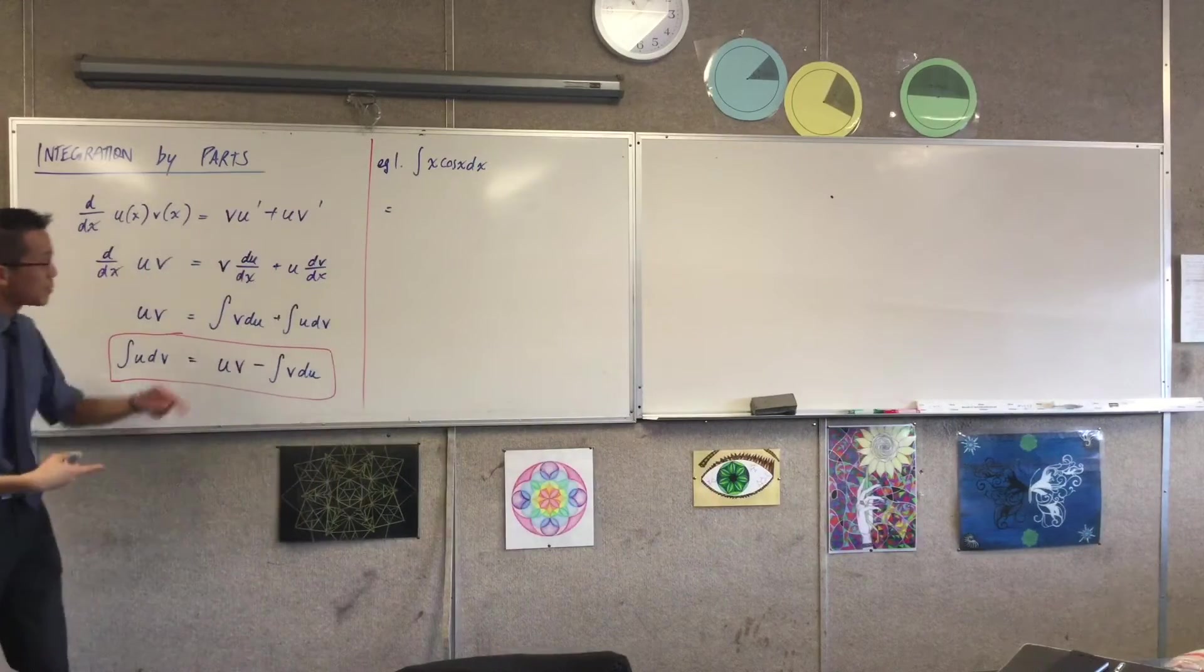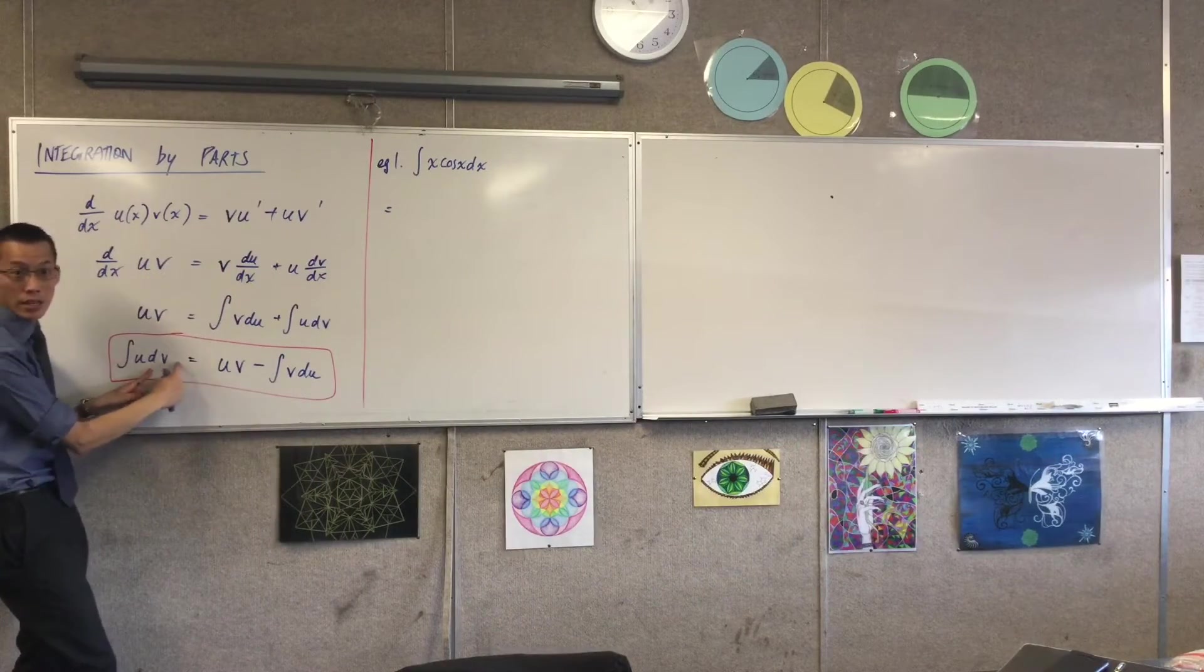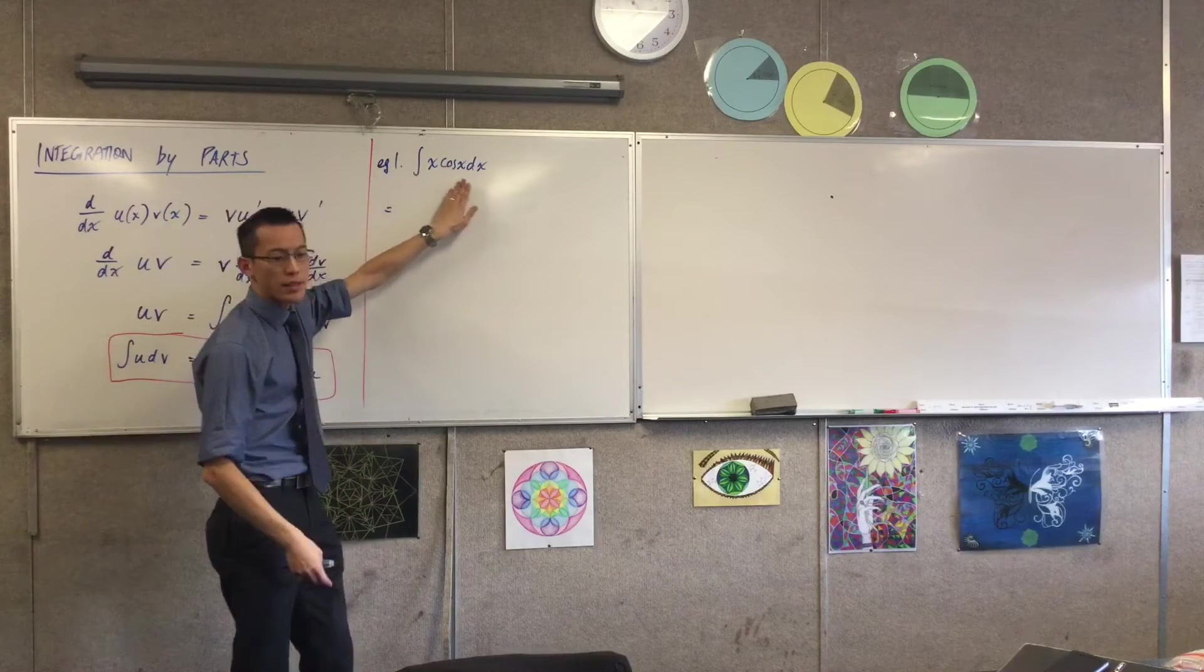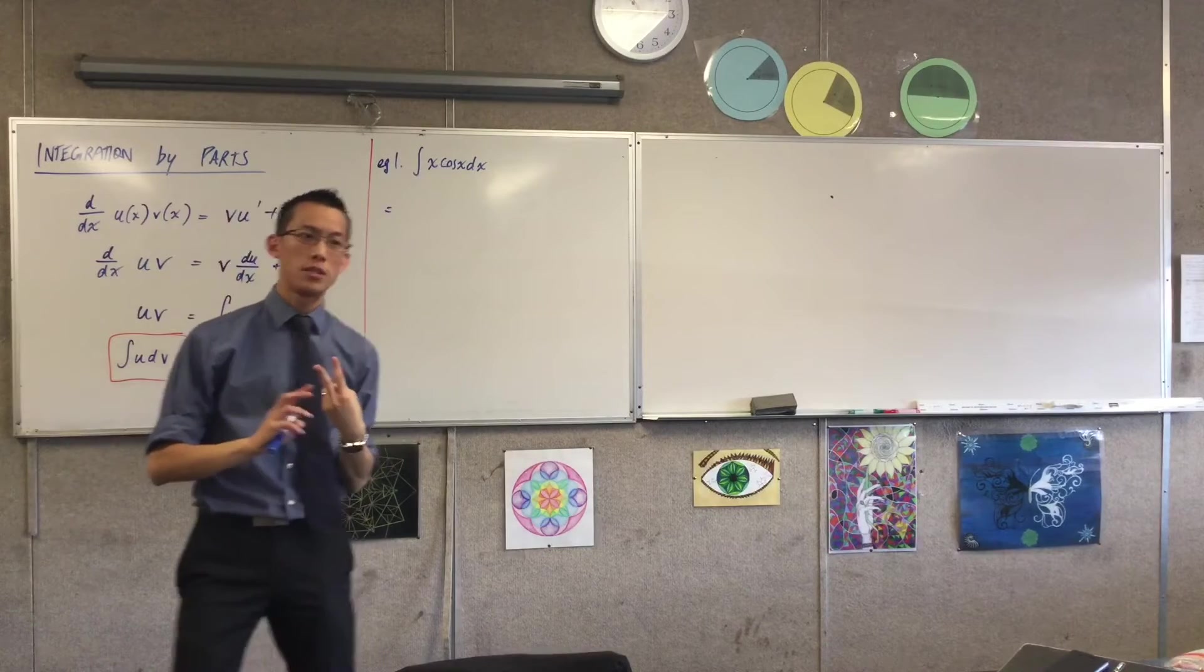It has to be dv/dx because do you notice there's no dx here, so to compensate for this dx that's there I have to divide through by dx. So I want one of these to be u and one of them to be dv/dx.